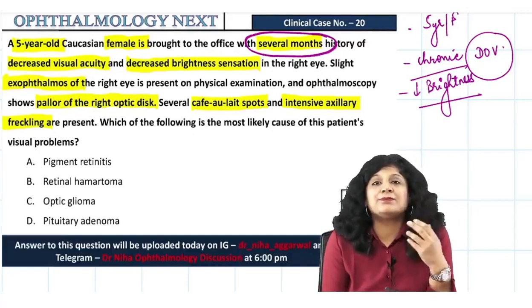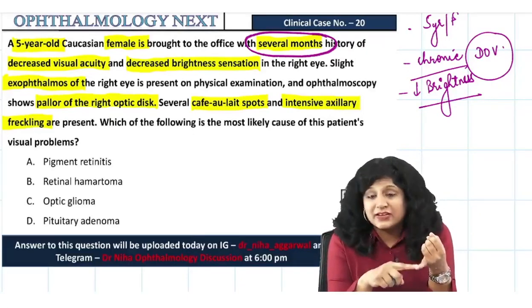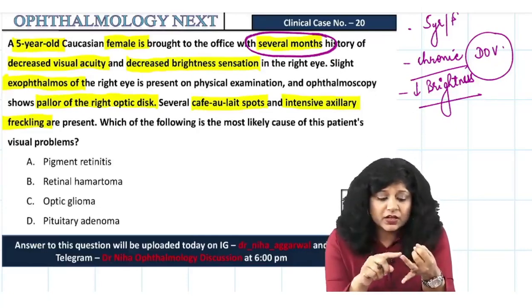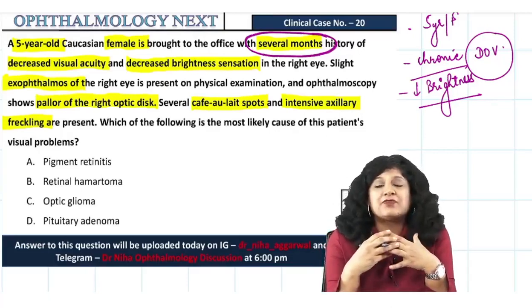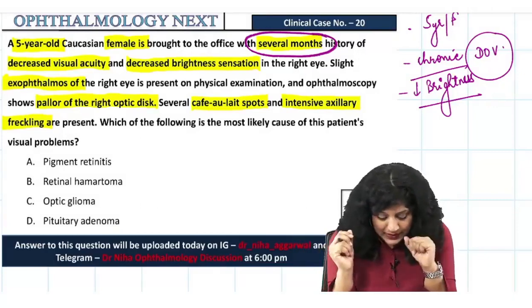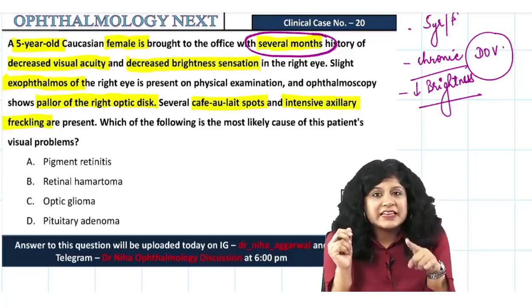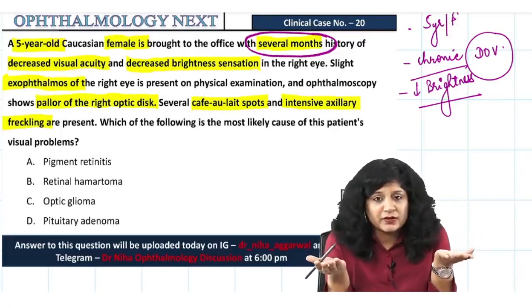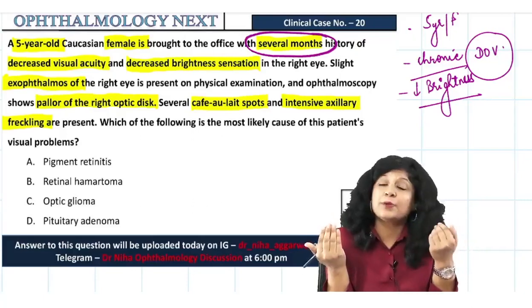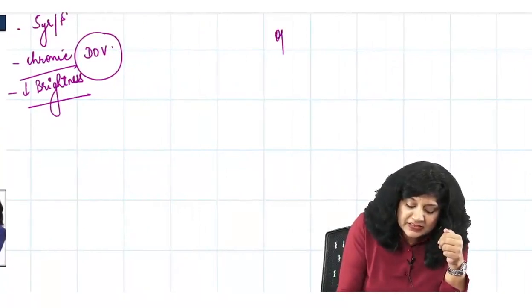If you are thinking of optic neuritis, beware — optic neuritis is an acute condition causing acute problems. They are saying exophthalmos is also present. Optic neuritis does not lead to exophthalmos. They are also saying there is pallor of the optic disc, which does not fit optic neuritis either.